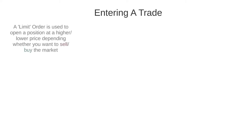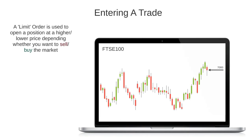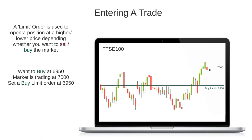The next order type you can use to open a trade is a limit order. A limit order enables a trader to enter a buy or sell position above or below the current market price. For example, if I wanted to open a buy position on the FTSE 100 at 6,950 and it was currently trading at 7,000, I could set a buy limit order at 6,950 and my broker will enter me into a buy position if the price falls to 6,950. Even if I am away from the charts when that happens, the order will be executed on my behalf.